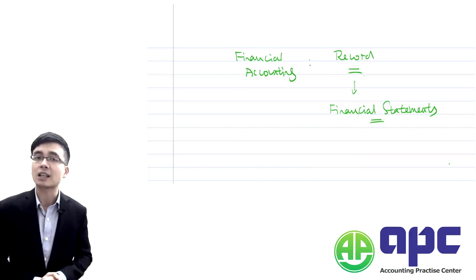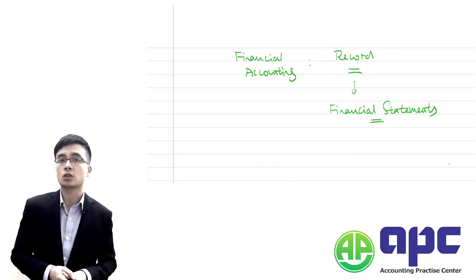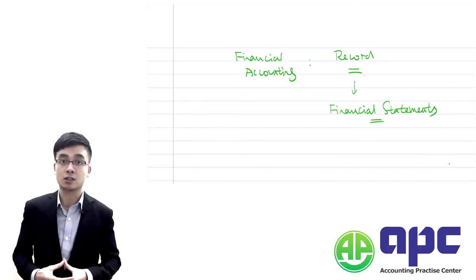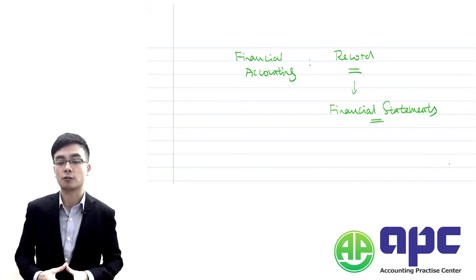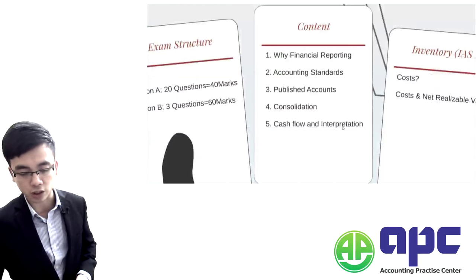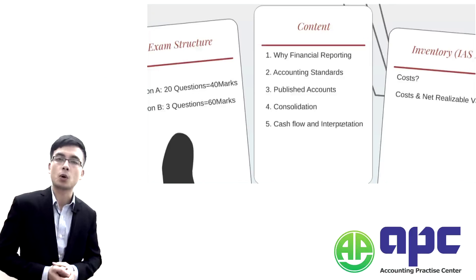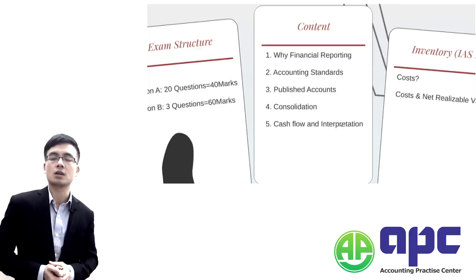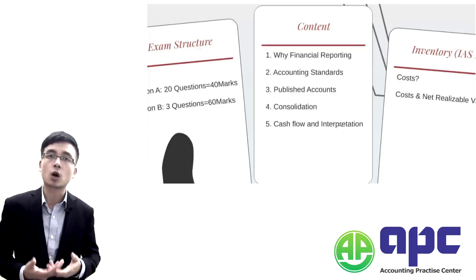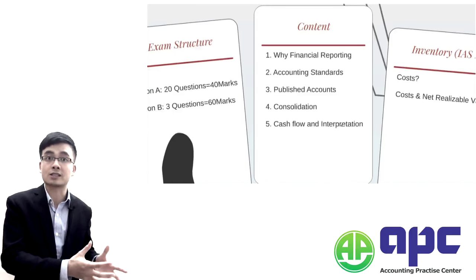F7 is very, very practical — very useful if you are a financial accountant in real life. Financial reporting exists because our aim is to record what has happened within our organisation.